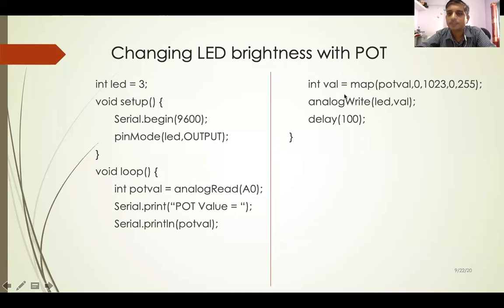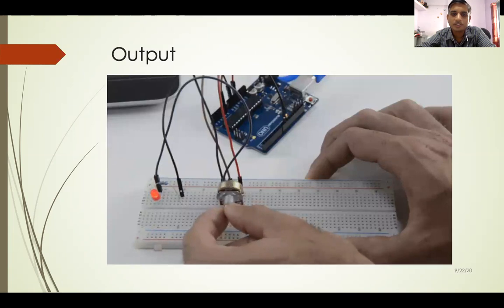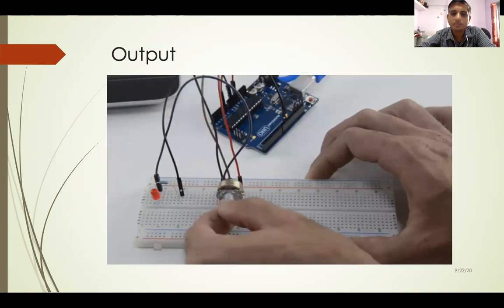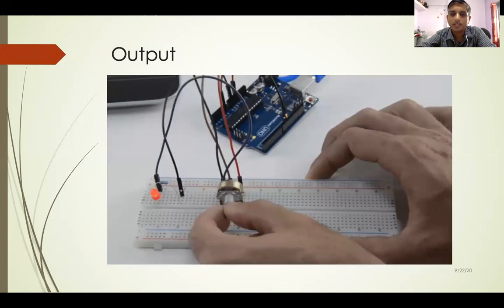Now val has the converted value. If potval is at its maximum of 1023, it is converted to 255, so val contains 255. Then analogWrite(led, val) gives full LED brightness. Similarly, you can change the LED brightness by turning the potentiometer shaft — as you change the potentiometer, the brightness of the LED changes accordingly.